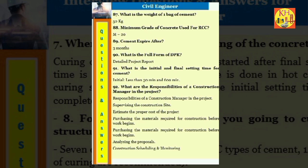Question 92: What are the responsibilities of a construction manager in the project? Responsibilities of a construction manager in the project: supervising the construction site, estimate the proper cost of the project, purchasing the materials required for construction before work begins, analyzing the proposals, construction scheduling and monitoring. Question 93: What can be the potential risk factors for workers on the construction site? Following are the risk factors for workers for not following the safety protocols: risk to fall from height, failure scaffold and trench, change of electric shock and arc blast, motion injuries.